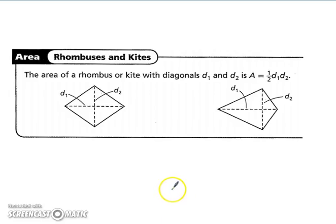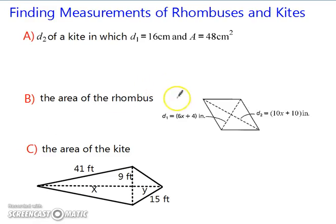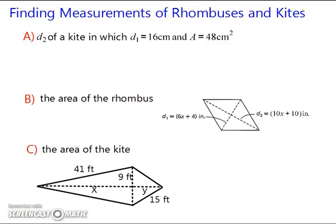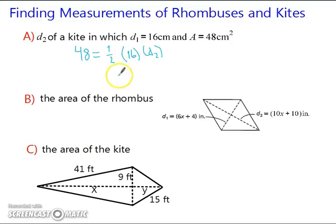Let's look at the area of rhombuses and kites. The area of a rhombus or kite with diagonals d1 and d2 is one-half times d1 times d2. For example, to find d2 of a kite where d1 equals 16 centimeters and the area is 48 centimeters squared: 48 equals one-half times 16 times d2. One-half of 16 is 8, so 48 equals 8 times d2. Dividing both sides by 8, d2 equals 6 centimeters.